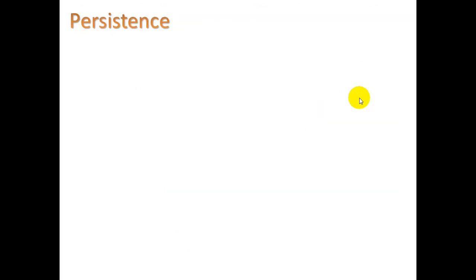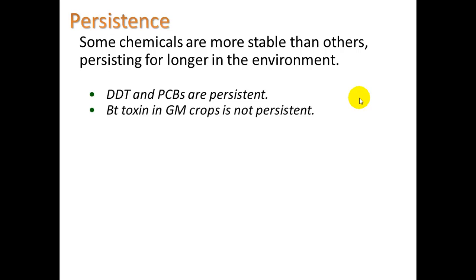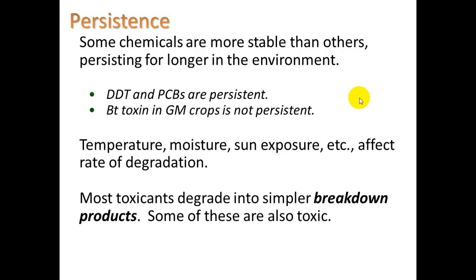Let's look at the idea of persistence of these molecules. Some chemicals are more stable than others, persisting longer in the environment. DDT and PCBs are persistent — they can take literally 30 or more years to break down. Whereas BT toxin in GM crops is not persistent and breaks down pretty quickly. What breaks them down? High temperatures, moisture, sun exposure, and the strong UV rays of the sun can all affect the rate of degradation. Most toxicants degrade into simpler breakdown products, and some of these are also toxic. For example, DDT breaks down to DDE, which is also toxic.